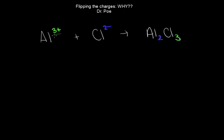Why does the charge of the aluminum end up as the number of atoms of chloride? And similarly, why does the charge of the chloride become the number of atoms of the aluminum? Why does this make sense?